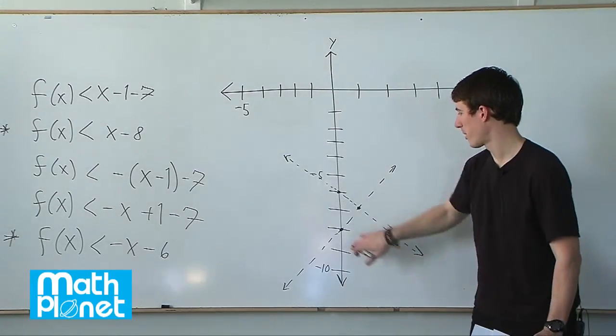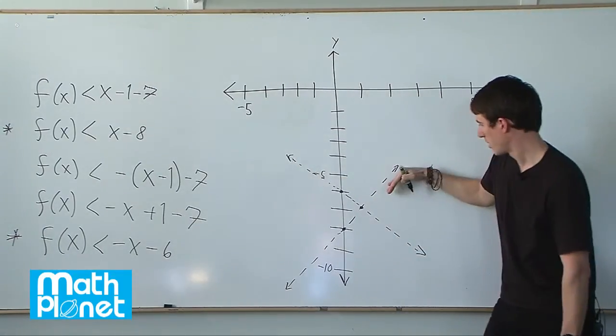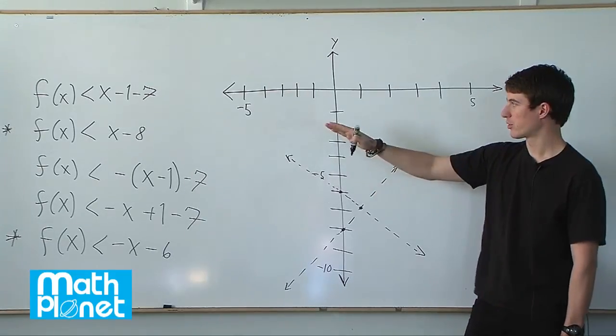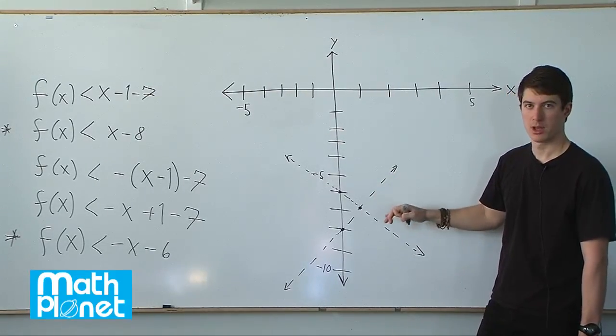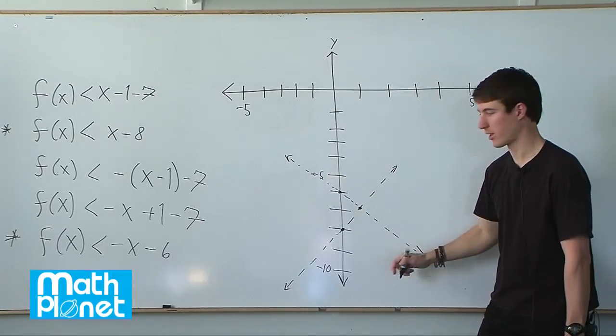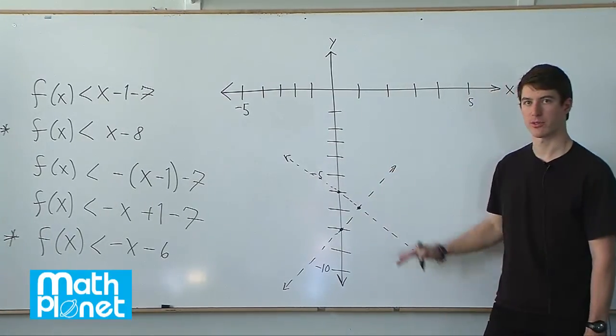So we have a few different possibilities here. If we look at this first plot, we know that f(x) is less than this line. So the y values, or the up and down, are less than, so the answer is less than this. So we're going down from this line. So in other words, we're interested in anything over here. Anything over here from this line.